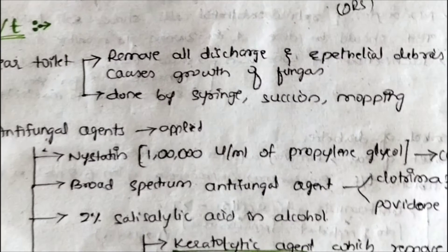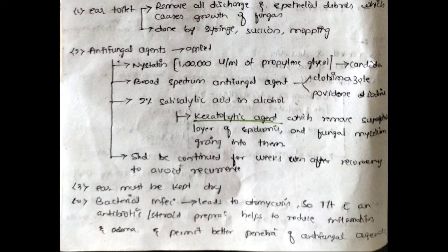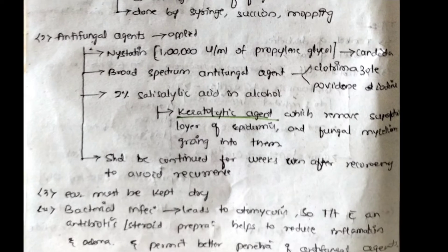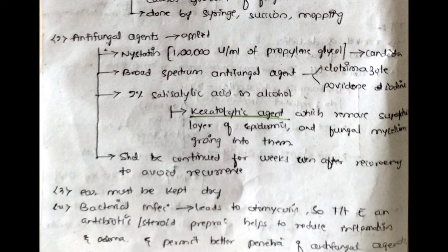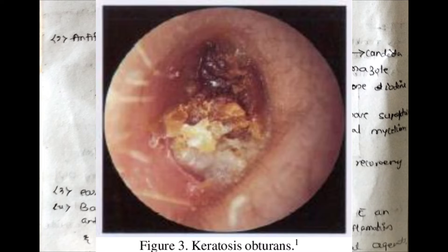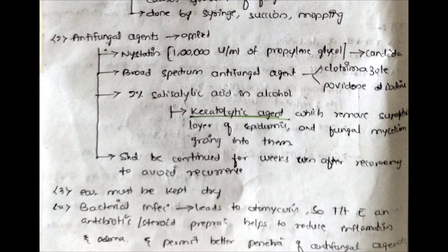Antifungal agents are then applied. Nystatin — one lakh units per ml in propylene glycol — is used specifically for Candida. Broad-spectrum antifungals like clotrimazole and povidone-iodine are also used. Another agent is 2% salicylic acid in alcohol, which is a keratolytic agent. It removes the superficial layer of the epidermis along with the fungal mycelium growing into it, similar to its use in keratosis obturans.